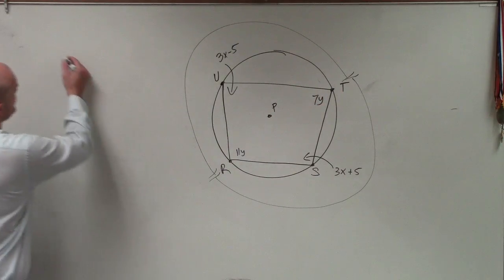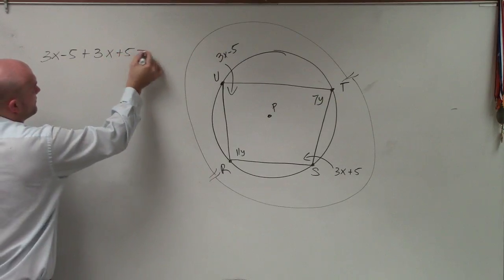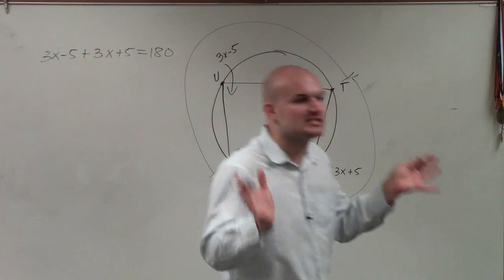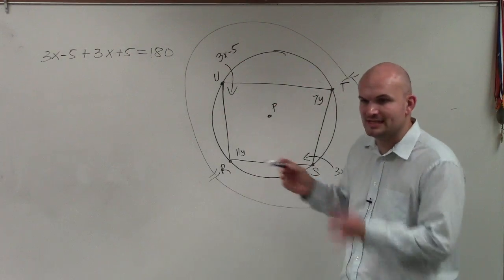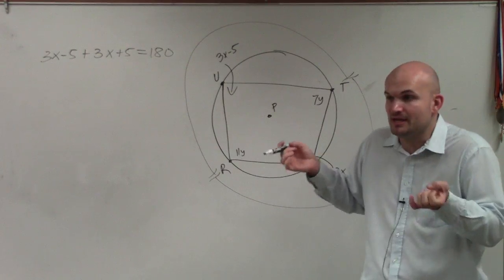So what I can do is say 3x minus 5 plus 3x plus 5 equals 180 degrees. Because what their expansion is going to measure up to is if both of these expand to add up to 360, then their measurement is only going to be 180.